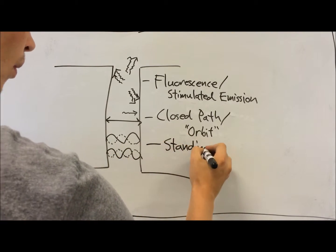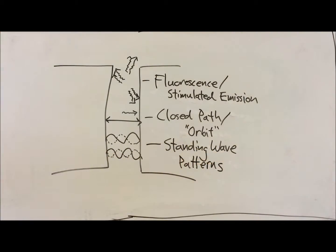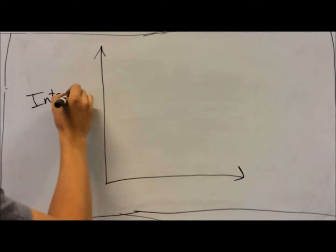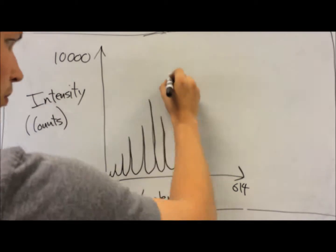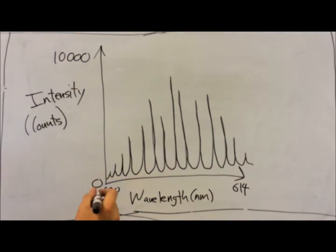Additionally, once an orbit is formed, the light interferes with itself, creating standing wave patterns. We can see this reflected in the plot of intensity versus wavelength taken with a spectrometer. Each peak corresponds to an integer number of wavelengths within the cavity, since these are the only wavelengths capable of forming a standing wave pattern and achieving maximal amplification.